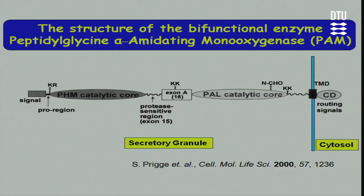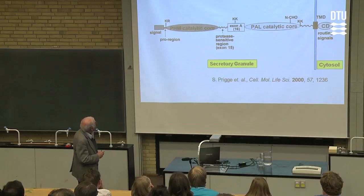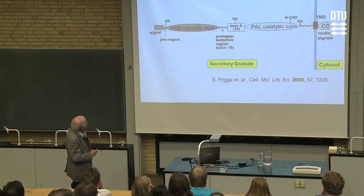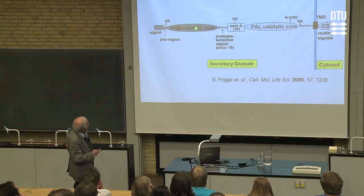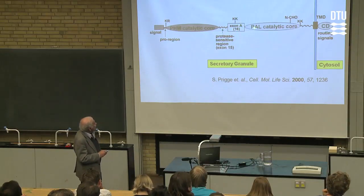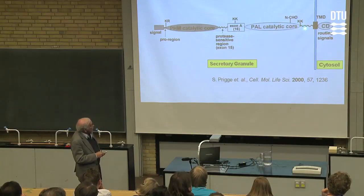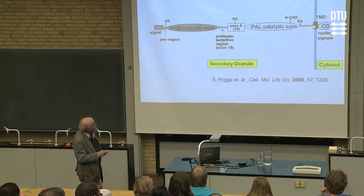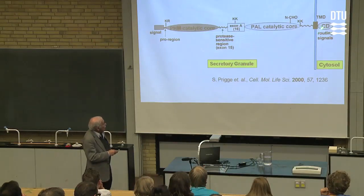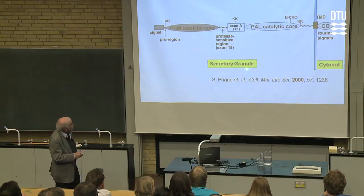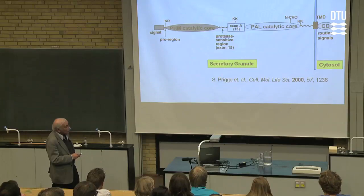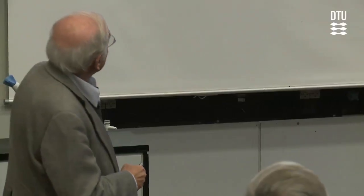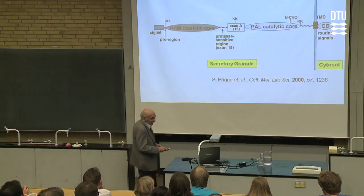In mammals, the enzyme has a quite complicated genetic arrangement. It has a signal peptide, the catalytic core that will bind the coppers, a connection that can be changed during expression, then the catalytic core of the second half, a connector to the plasma membrane helix, and a very small cytosolic portion. The enzyme operates in secretory granules, which is a low pH organelle at about 5.5, and that has important considerations for the activity of the enzyme.